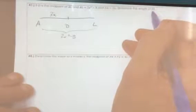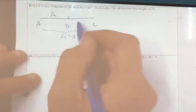and DA equals 3x, then find DL. So if D is the midpoint, then DL must also be 3x. So their total must be 6x.